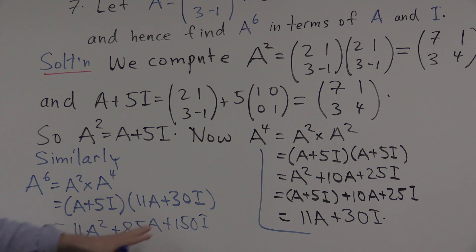So we've got A to the sixth in terms of I, A, and A squared. If we get rid of that A squared and replace it with A plus 5I again, then we'll be able to write the whole thing just in terms of A's and I's. So that'll be 11 times A plus 5I. We're replacing the A squared.